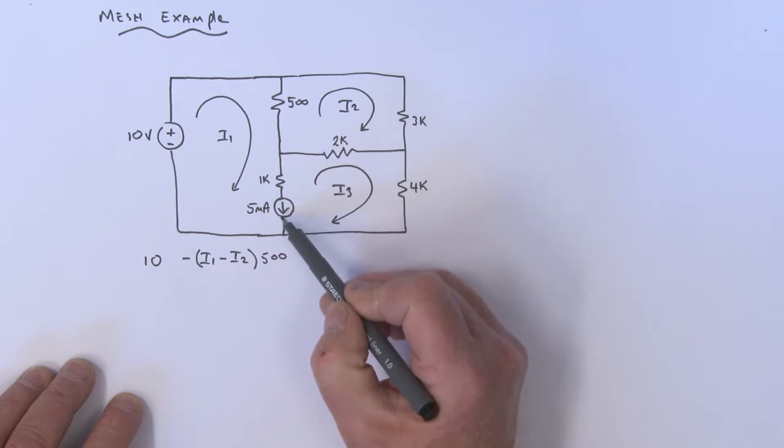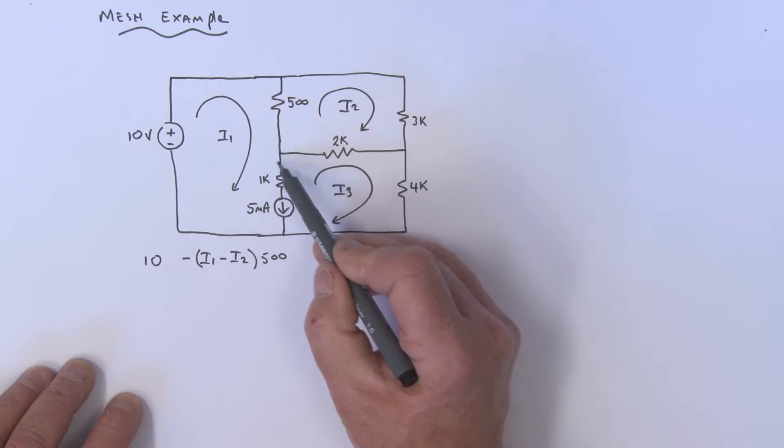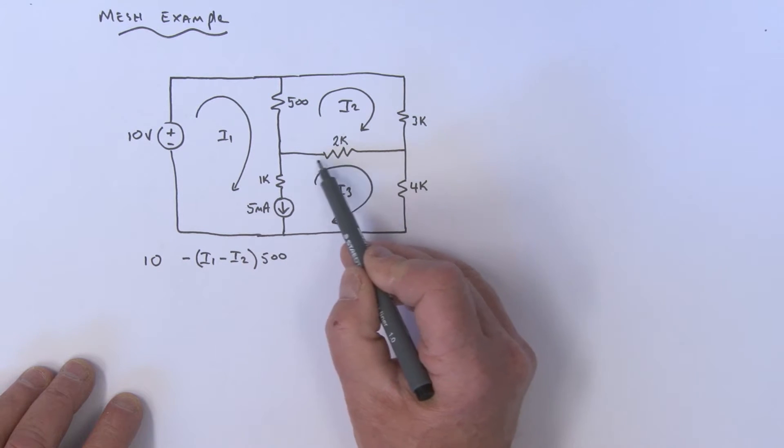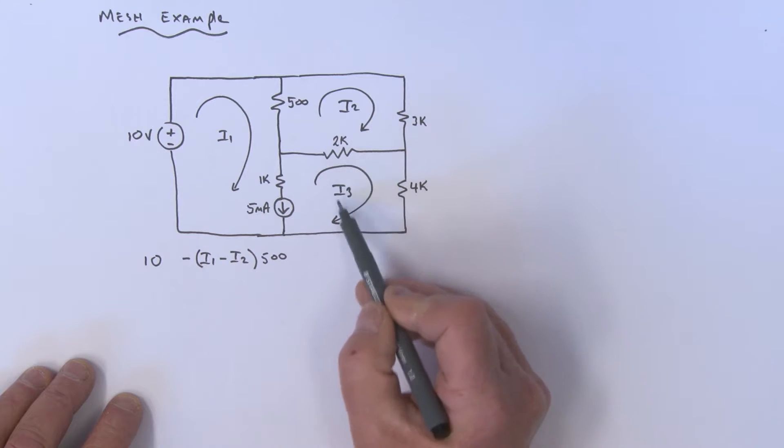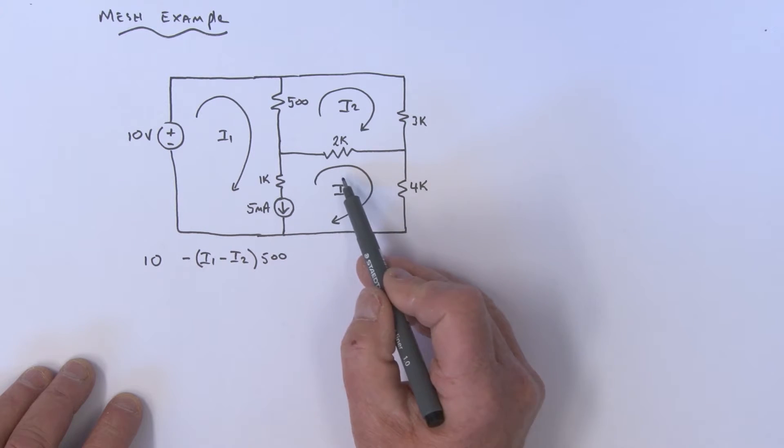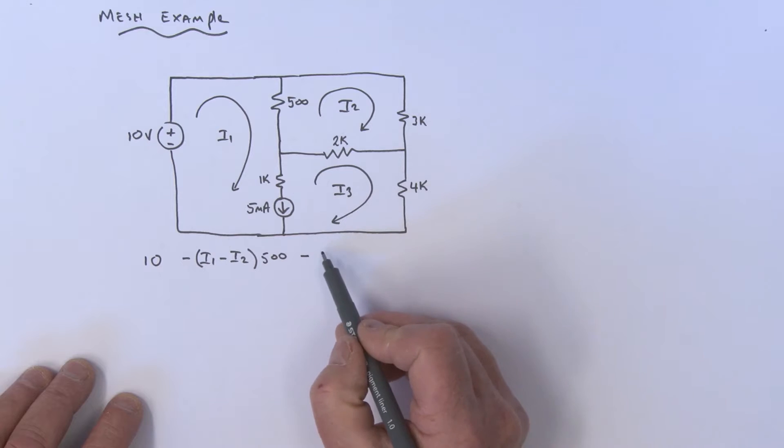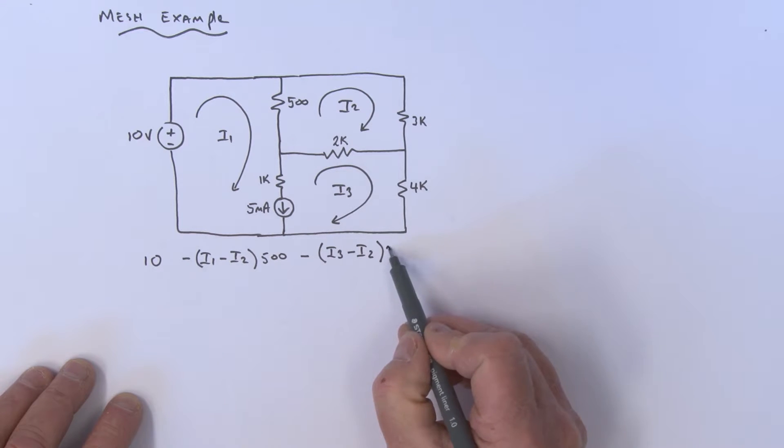We have a problem if we continue down here because we don't know the voltage across the current source. So we'll go in this direction and get the voltage across this 2k resistor with I3 leading: minus (I3 - I2) times 2k.